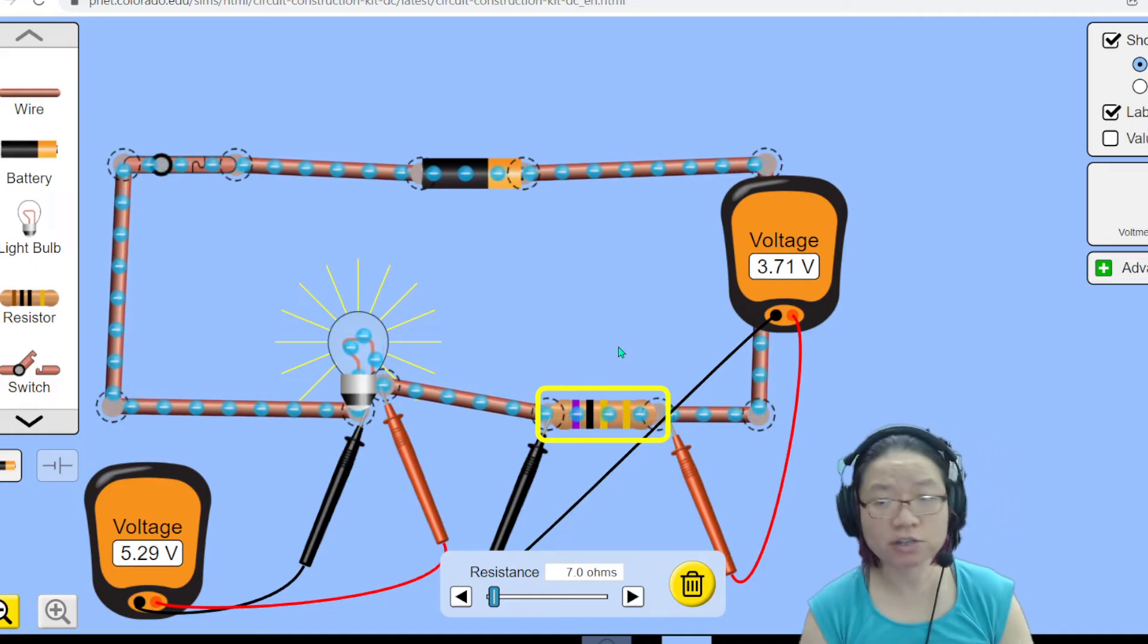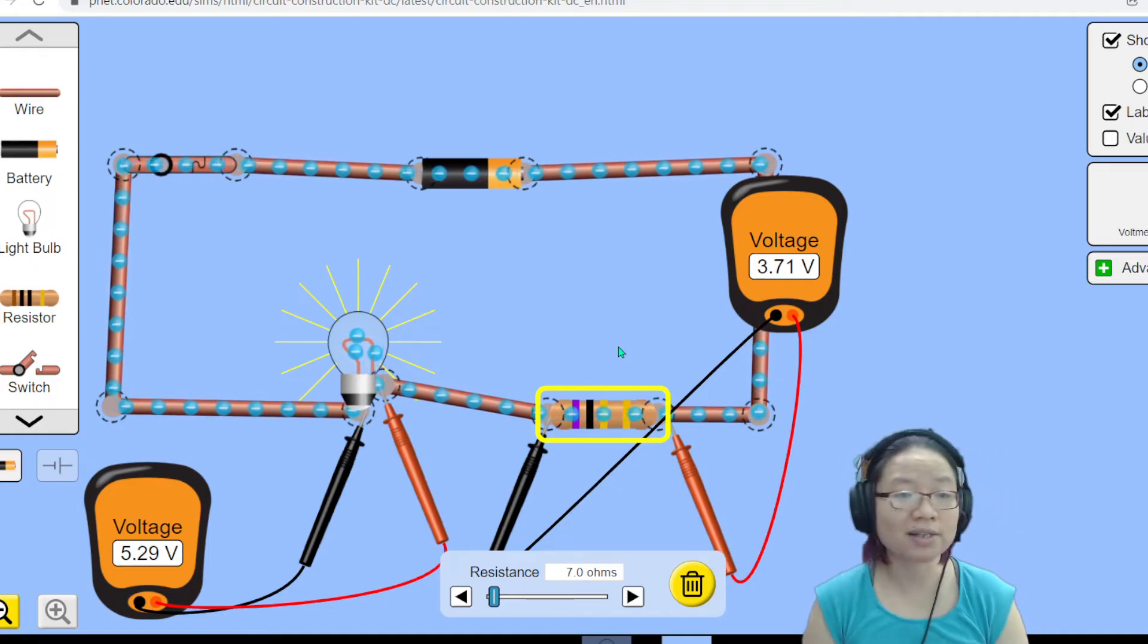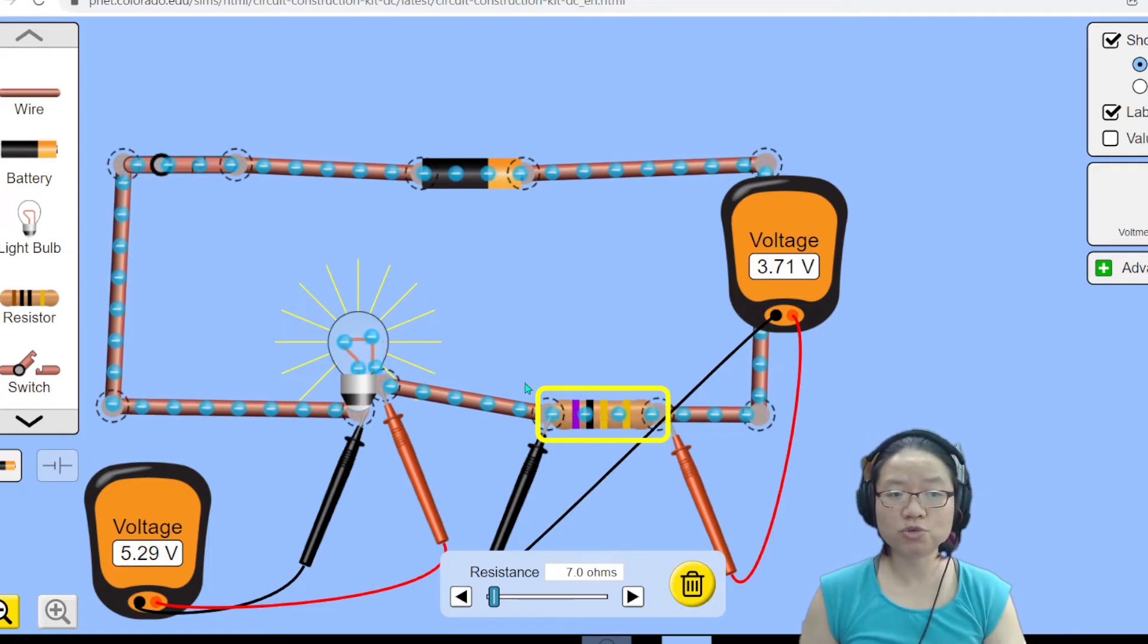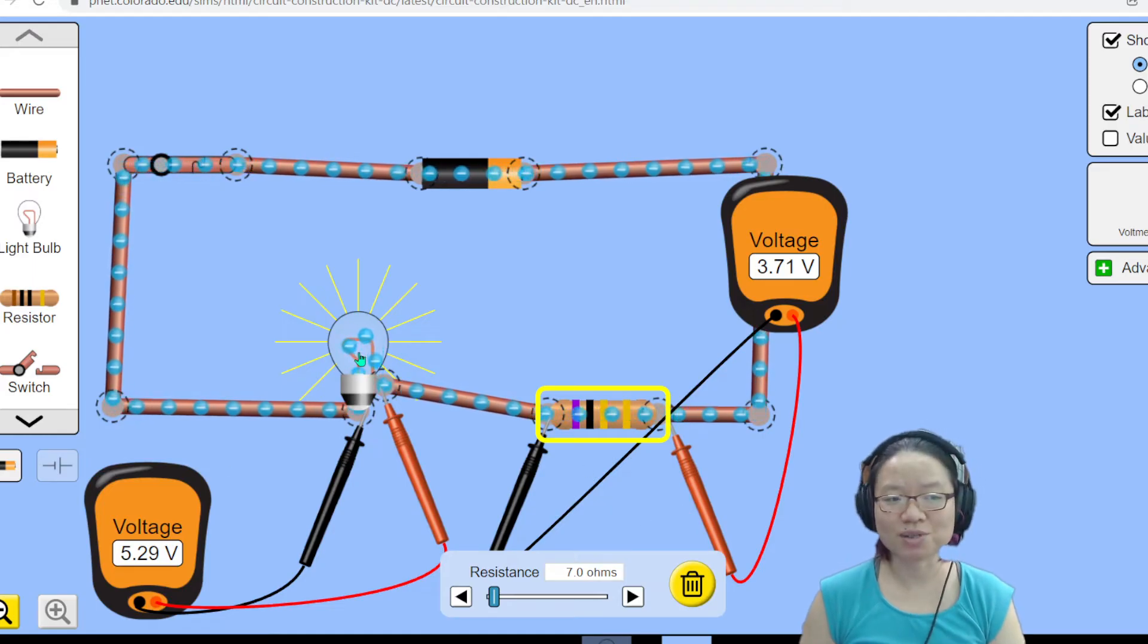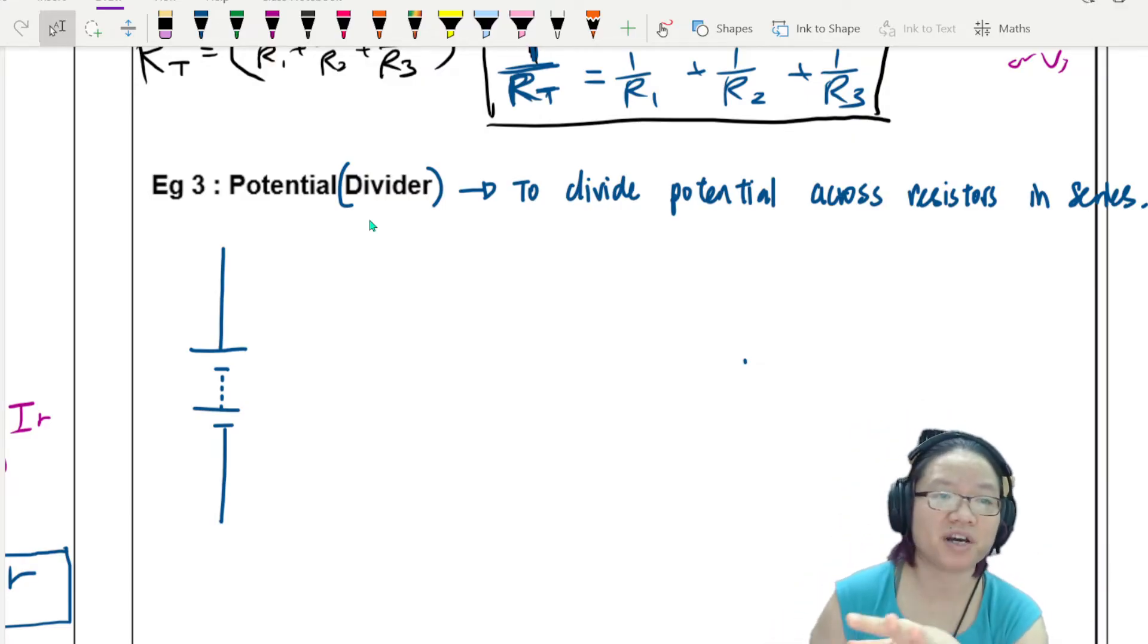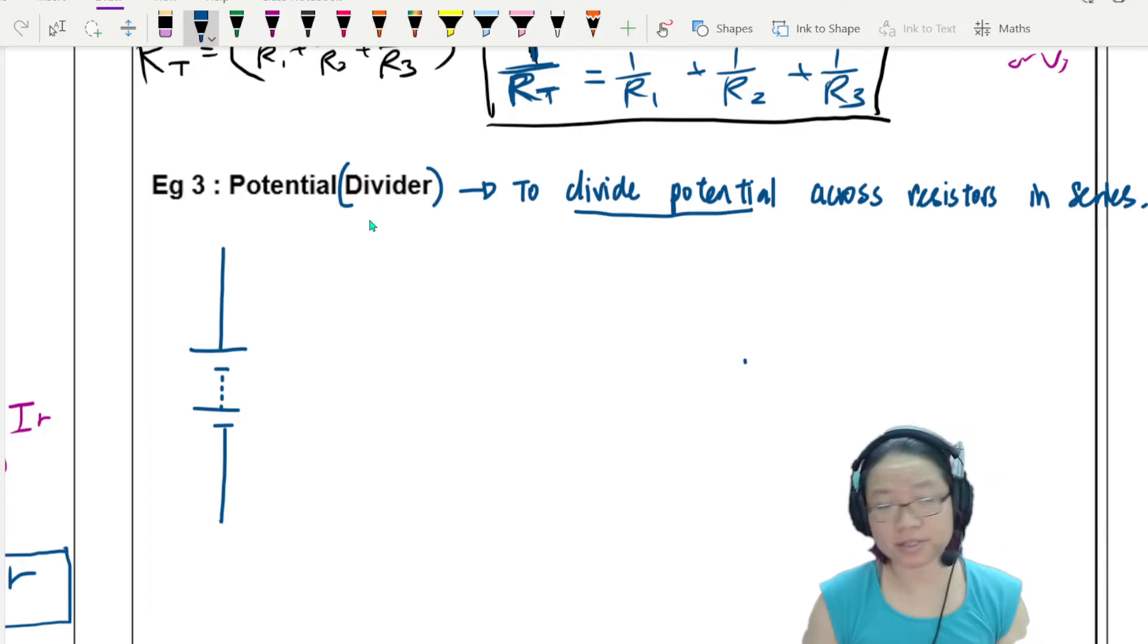And the sharing of this is by ratio. So let us go look at our notes and try to figure out how to write out the ratio and also understand what exactly is potential dividers. Dividing the potential across two circuit components that are in series. And we are back. So in this part, the potential divider is to divide potential across resistors in series.